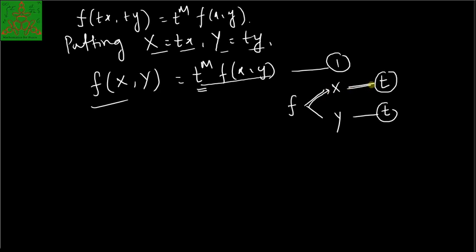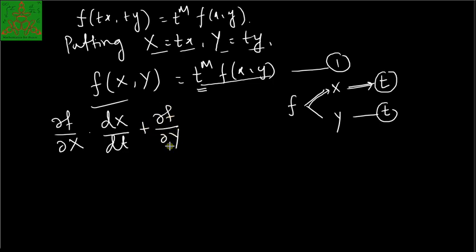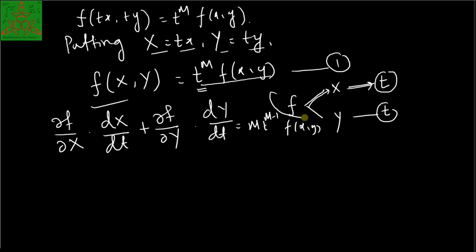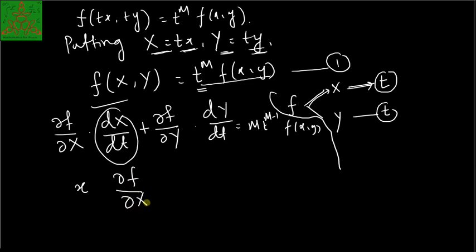Going via the first path: (∂f/∂X)·(dX/dt), and since X = tx, dX/dt = x. Then plus (∂f/∂Y)·(dY/dt), since Y = ty, dY/dt = y. The right-hand side gives m·t^(m−1)·f(x, y). So we have: x·(∂f/∂X) + y·(∂f/∂Y) = m·t^(m−1)·f(x, y).